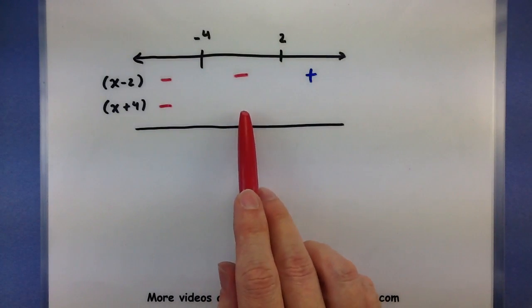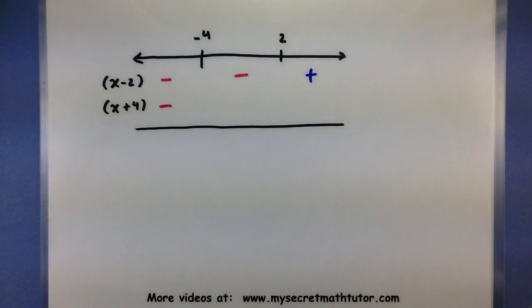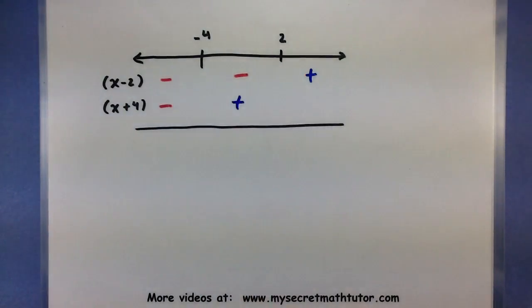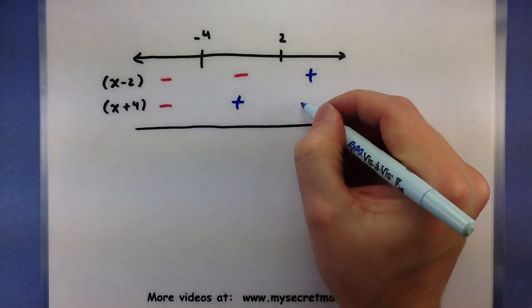Now I'll grab a test point in here, let's say 0, plug it in. So 0 plus 4 would be a positive 4, most important, positive. And let's grab something over here like a 4, plug it in, 4 plus 4 is a positive 8, again positive.